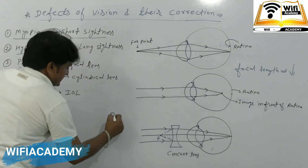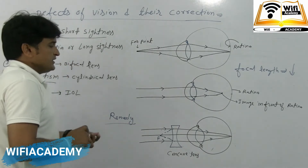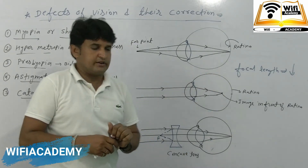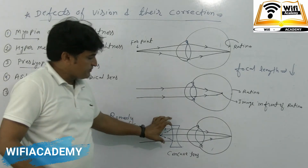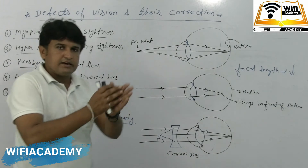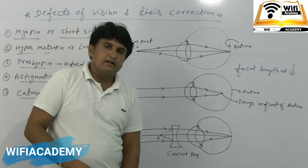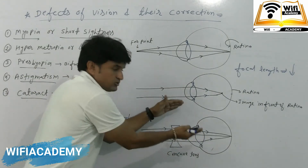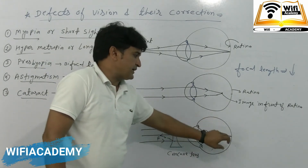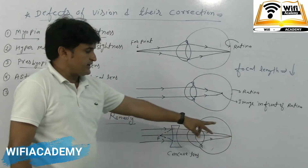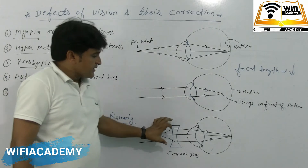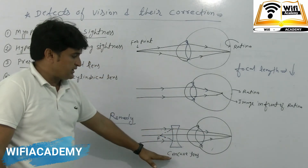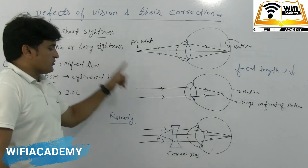Now, what is the remedy for myopia? We need to reduce the converging power. We use a concave lens. A concave lens diverges the light rays, and then the image is correctly drawn on the retina. So myopia is corrected using a concave lens.